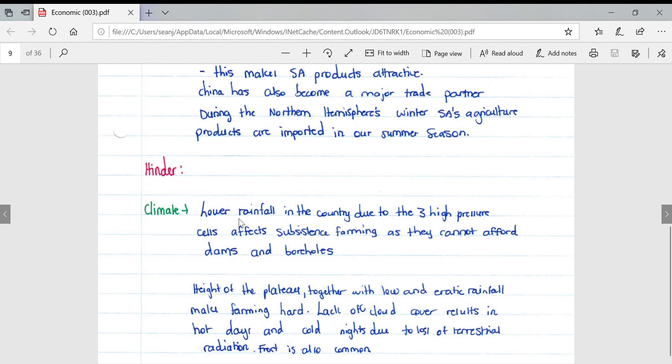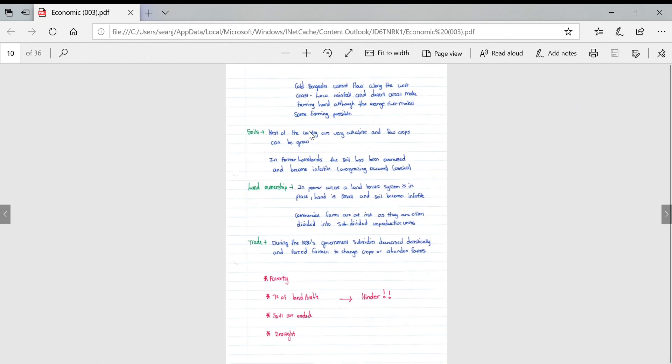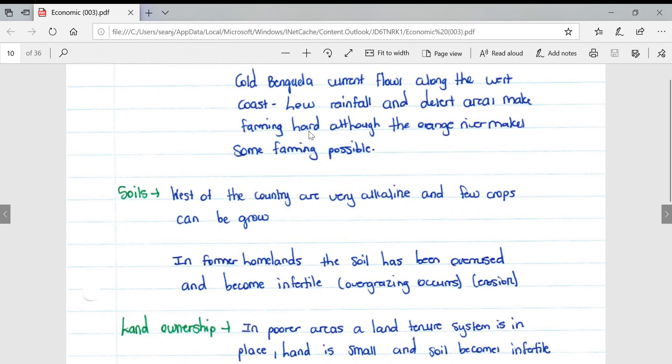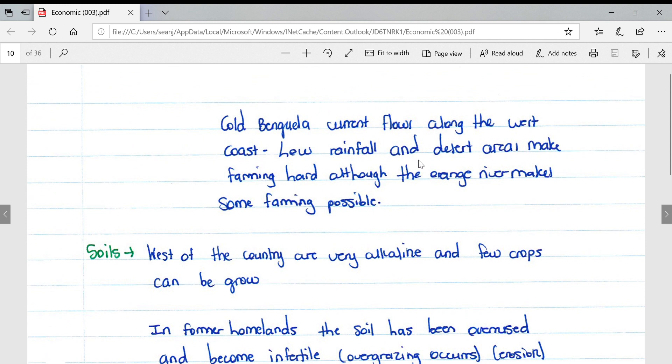Looking at factors that hinder agriculture in South Africa, our climate presents challenges. Lower rainfall in the country is due to three high pressure cells: the south Atlantic anticyclone, Kalahari high pressure, and south Indian anticyclone, which affects subsistence farming as they cannot afford dams and boreholes. Height of the plateau together with low and erratic rainfall make farming hard. Lack of cloud cover results in hot days and cold nights due to lost terrestrial radiation. Frost is common in higher lying areas. The cold Benguela current flows along the west coast, leading to low rainfall and desert areas.